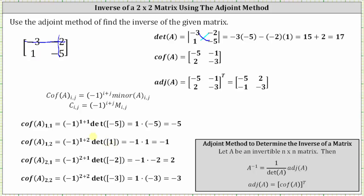Simplifying, we have the cube of negative 1, which is negative 1. The determinant of the 1 by 1 matrix is equal to 1, and therefore the cofactor is equal to negative 1 times 1, which is negative 1.